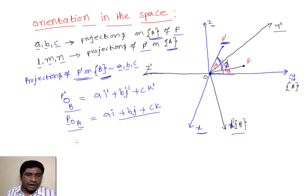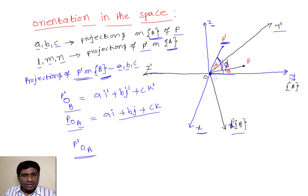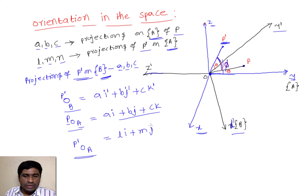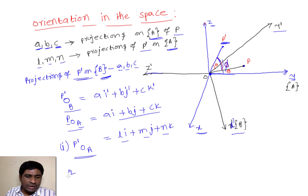These two expressions we understood. But now I want to write P' with respect to frame A. There are two ways to write this. The first way is to directly project: if you know the direct position of P' onto x, y, z with respect to frame A, then you can write it as L times i plus M times j plus N times k. But we don't know L, M, N — we need to find L, M, N for given a, b, c from the initial position.